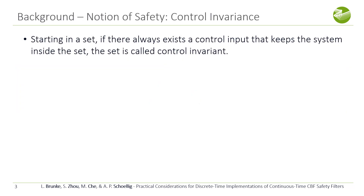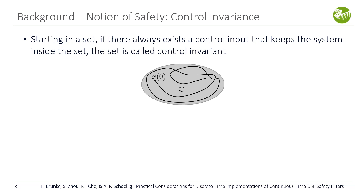First, some important background on control invariants. Intuitively, if we're starting in a set C with state x at time 0, and there exists a feasible control input that keeps the system inside the set for a future time — for example, x at time t is still in set C — then the set is called control invariant. We also refer to this as safety.